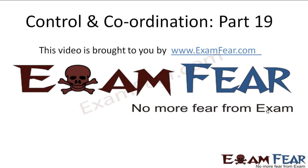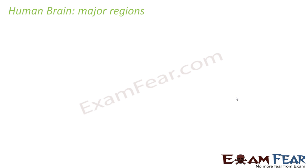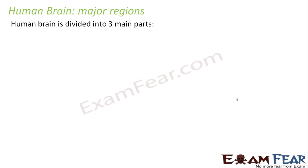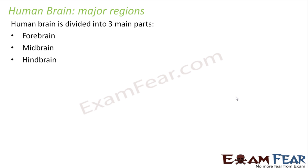Hello friends, this video on control and coordination part 19 is brought to you by examfear.com. So let us now have a look at the major regions of the human brain. The human brain is divided into three main parts: forebrain, midbrain and hindbrain.